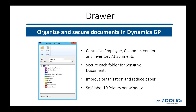Some products we probably won't demo today, but I want you to be aware we have them. The first is our Drawer product. It allows you to take your attachments within GP and categorize them into folders. Those folders are self-labeled, and if there's sensitive information, you can put security on them so only the people with access can view those documents.